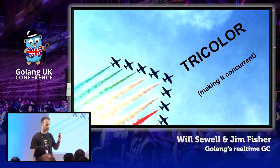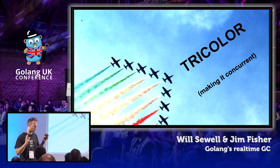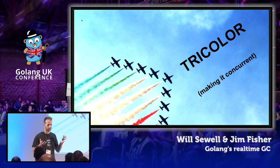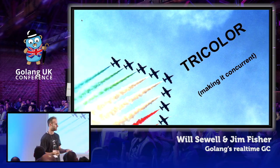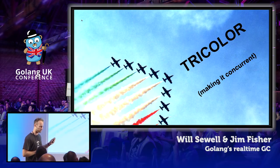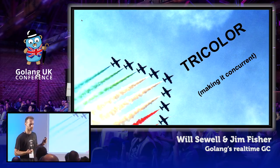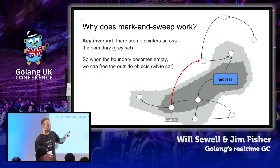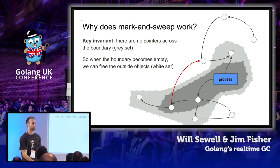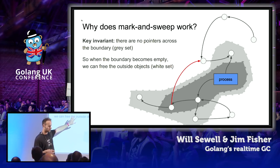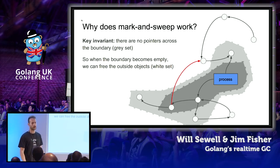How do you do that? It seems tricky, because you're going to be moving this graph around while you're also marking and sweeping it. The answer to how Go does this is something called the tricolor algorithm. To explain how it works, we really have to think about why normal mark and sweep works — it works by maintaining one key invariant: you do not have any pointers from your inner black set to objects in this outer white set.